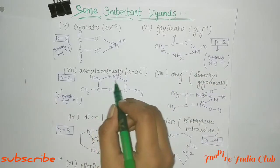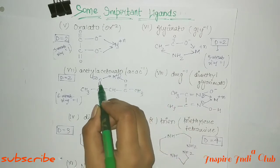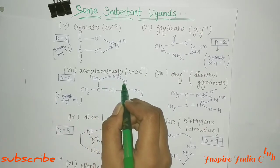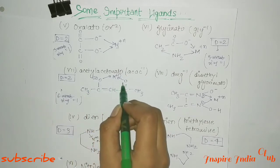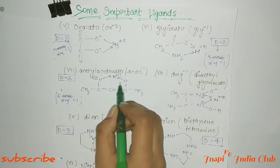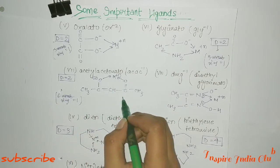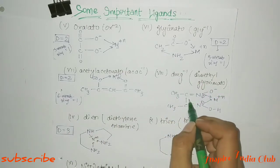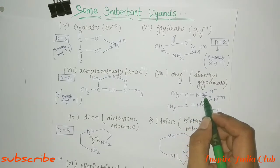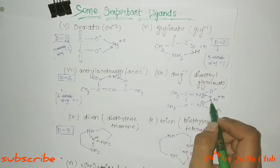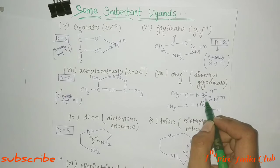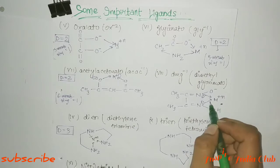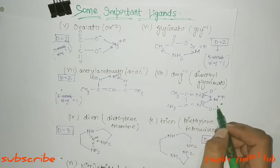Next, there is a ligand where a 6-member ring forms and a 5-member ring does not. Then comes DMG — dimethyl glyoximato. Here the best donor site is nitrogen; it donates from one side, and oxygen also donates. The best representation gives a 5-member ring formation of 1. Both nitrogen atoms also donate their lone pairs.